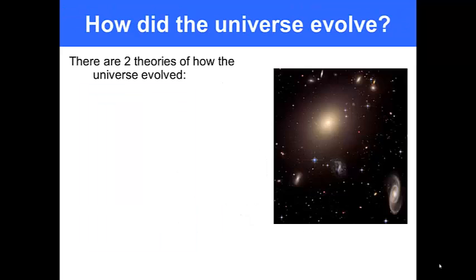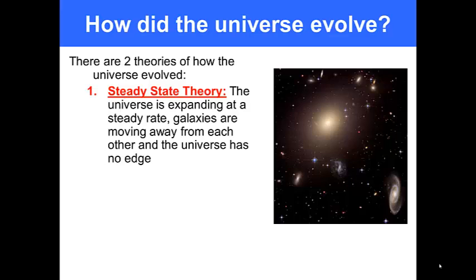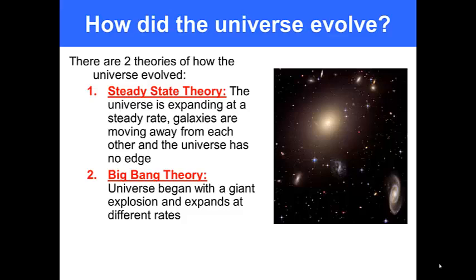How did the universe evolve? There are two theories about the evolution of the universe. The first is the steady state theory where the universe is expanding at a steady state and galaxies are moving away from each other. The Big Bang Theory, which is popularized by the television show with the same name, says that the universe began with a giant explosion and expands at different rates.